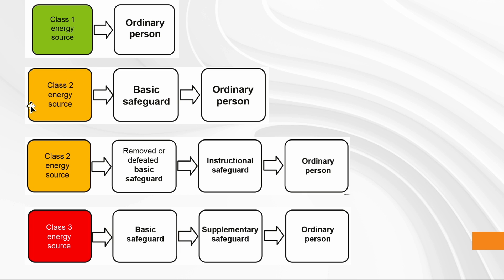When you're in a dangerous but not deadly situation — not likely to require hospitalization, not likely to start a big fire — a basic safeguard is sufficient. But if someone has to service the device and the basic safeguard is removed or defeated, you also need instructions. Those instructions might say: do not service this yourself, bring it to a repair shop, or ensure children do not touch this product. For a Class 3 energy source — potentially deadly or causing a large fire — you need both a basic and a supplementary safeguard, or alternatively a reinforced safeguard.